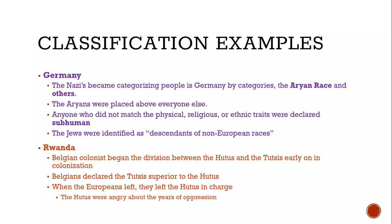These are very different time periods — the 1940s and 1994 — yet they follow the same stages of genocide. In Germany, the Nazis started categorizing people: Aryans were placed above everyone else. If you didn't match the physical, religious, or ethnic traits, you were declared subhuman. Jewish people were identified as descendants of non-European races. The concept of the Aryan race was so influential that the Shah of Persia reportedly changed the country's name to Iran because of his admiration for Hitler's discussions about the Aryan race.